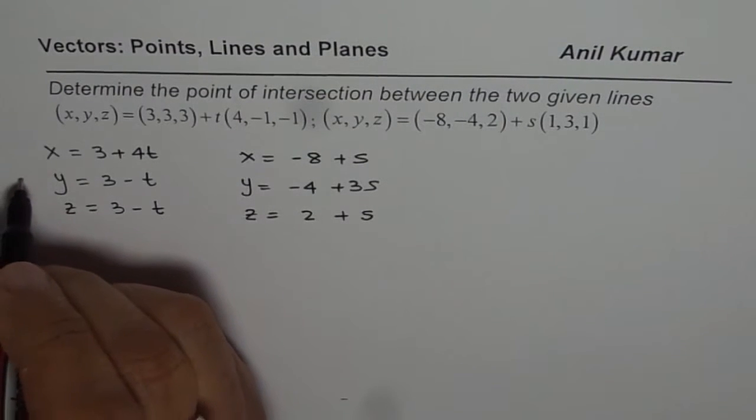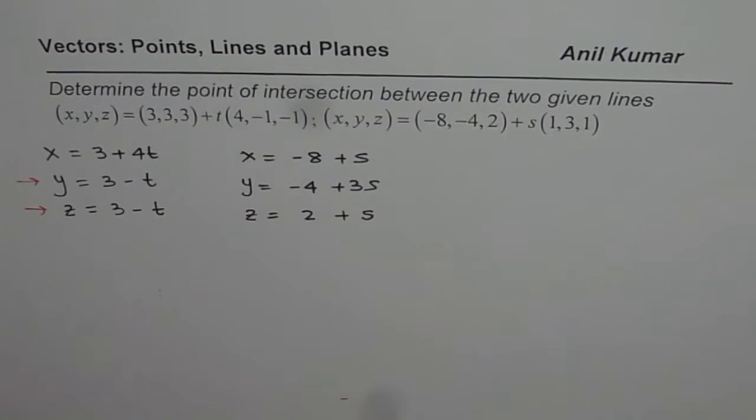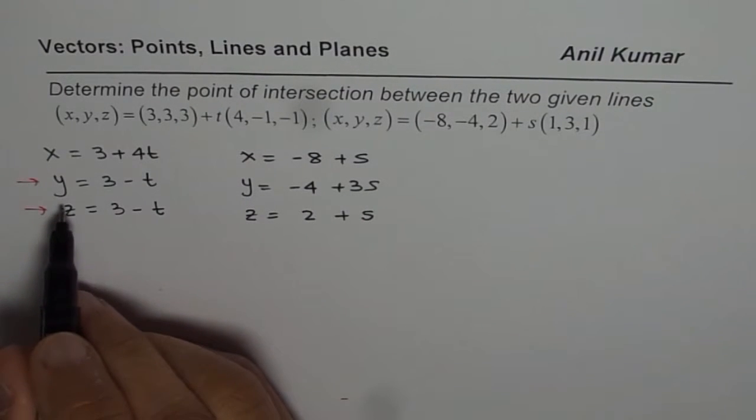Now the idea is to find the value of s and t using two equations. First question always is, which two equations to select. Now here, these two are the best options. Do you see that? 3 minus t, 3 minus t, they can cancel out and help you solve the equation very fast. So we will use these two equations.